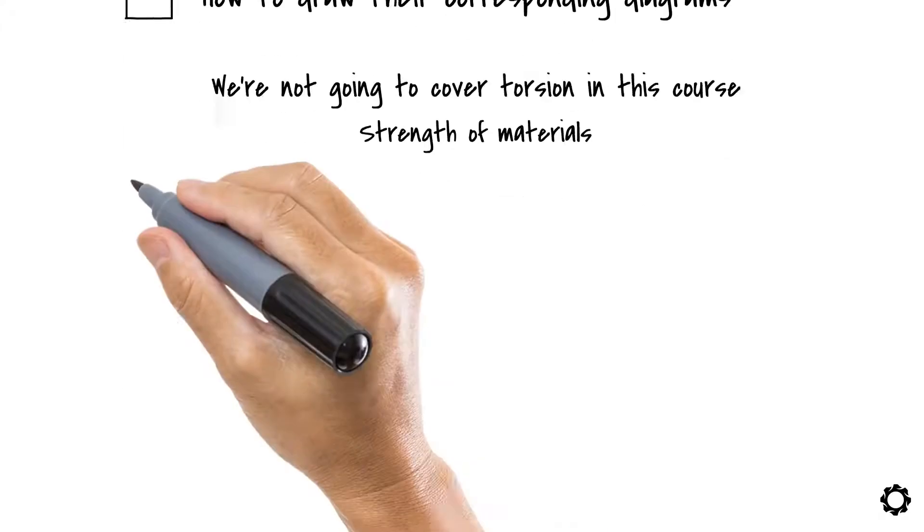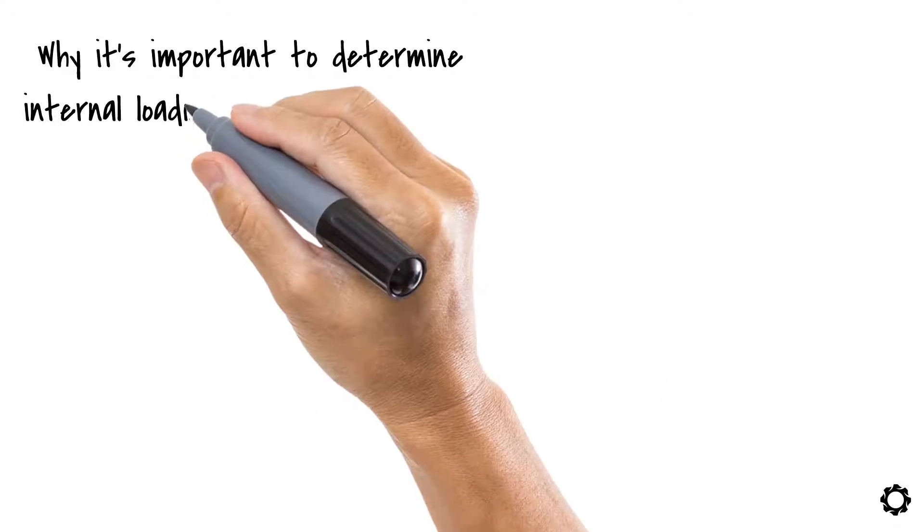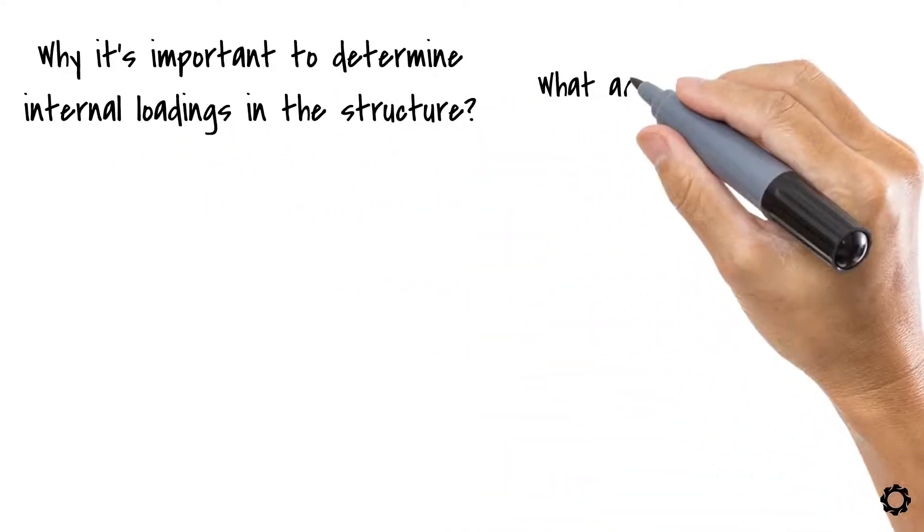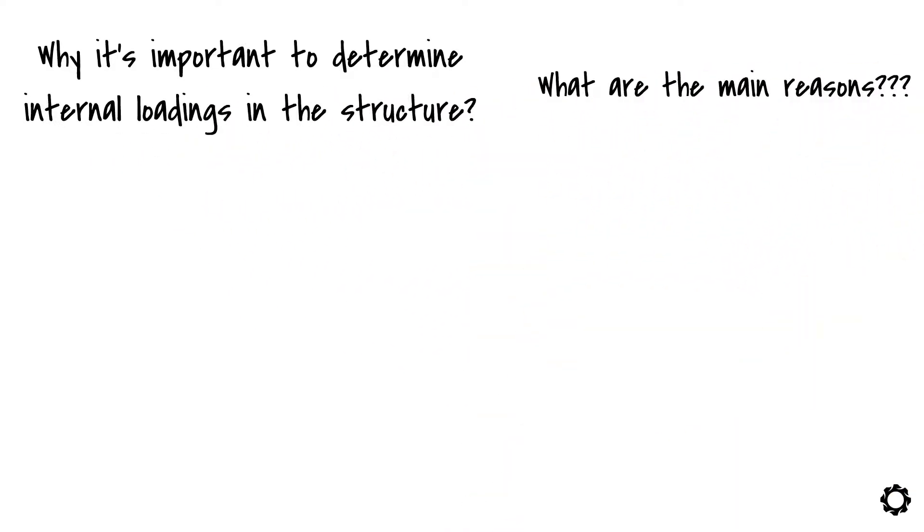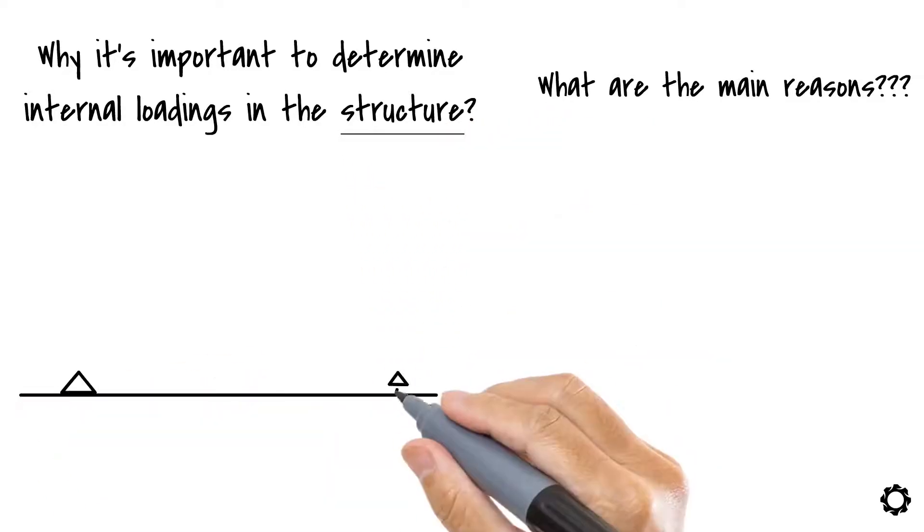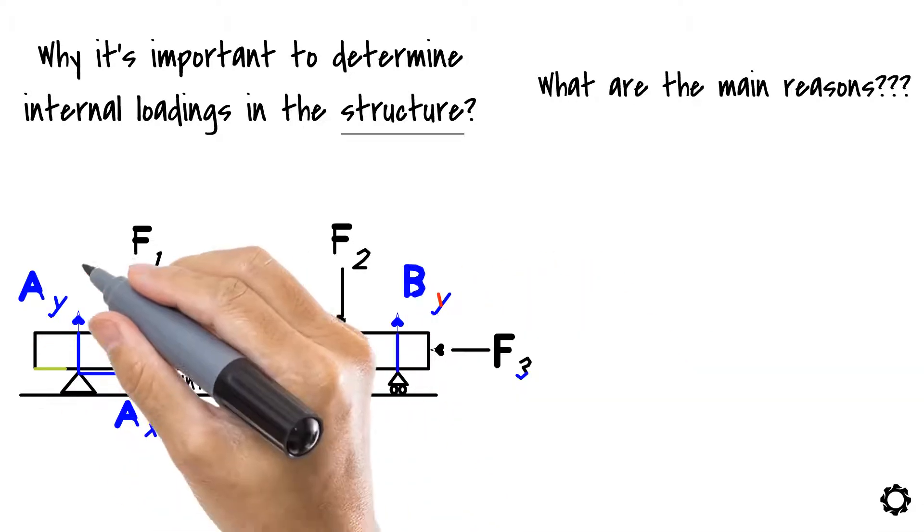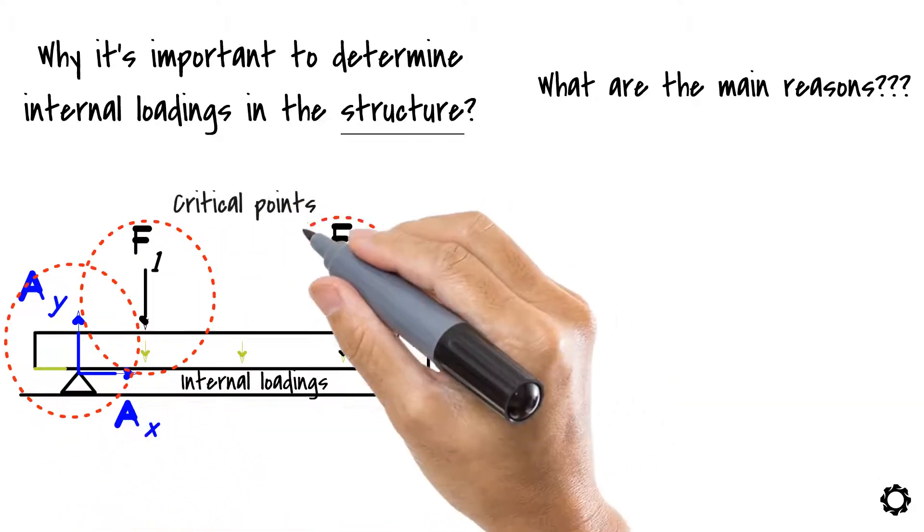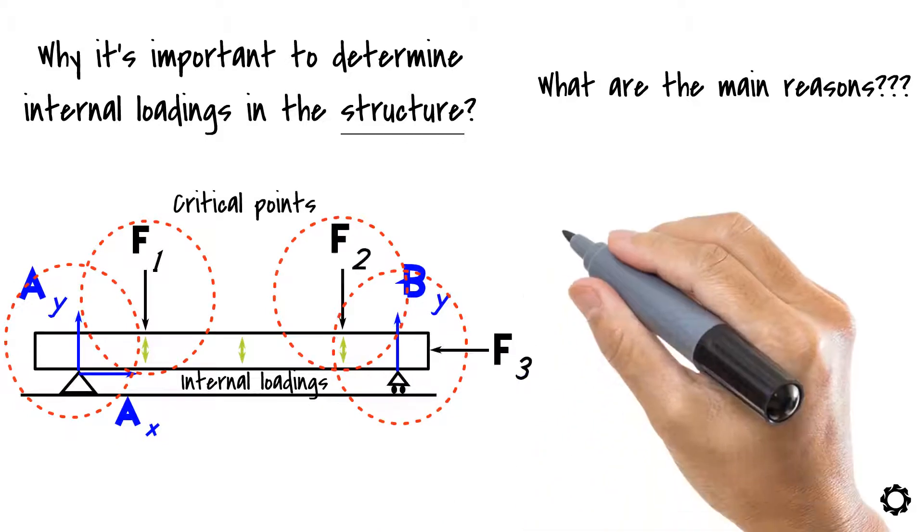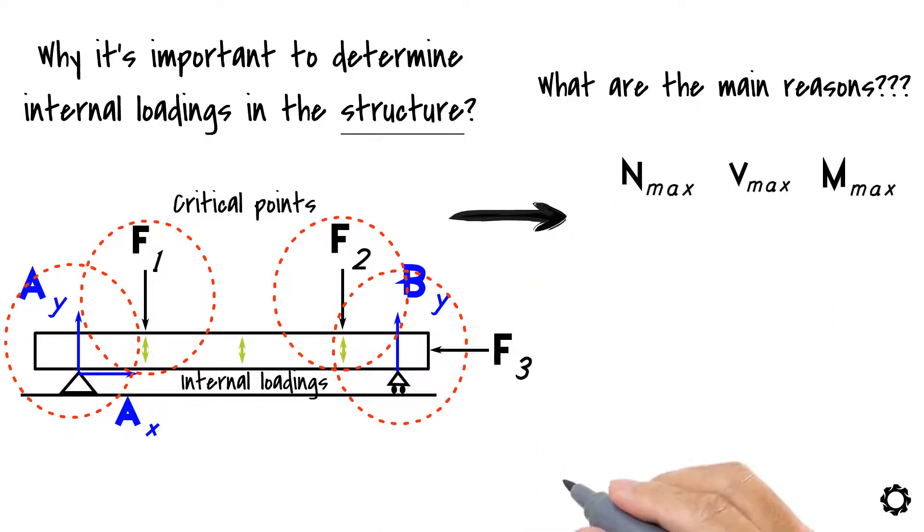First, we must understand why it's important to determine internal loadings in the structure. What are the main reasons for this? Well, if we would like to design some kind of structure, this requires that we define what kind of internal loadings affect it, especially at the critical points of the structure. By doing this, it's possible for us to find maximum loadings in the structure which will then determine what kind of material we are going to use for it and what would be the suitable dimensions for the cross-section of the structure.